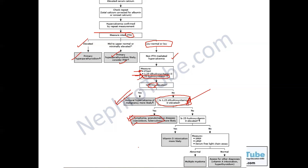If 25-hydroxyvitamin D is elevated, there may be vitamin D intoxication. If not, search for plasma cell dyscrasias by doing serum protein electrophoresis, serum free light chains, and serum immunofixation. If abnormal, the patient has plasma cell dyscrasias. If normal, the patient may be hyperthyroid or have vitamin D intoxication. If the patient has clinical criteria of hyperthyroidism, order thyroid function tests from the start.